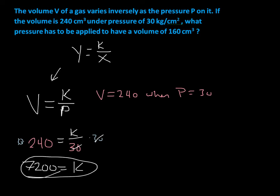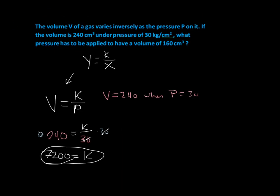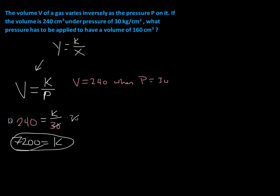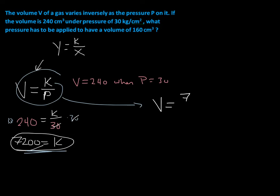After finding K, we plug K back into the equation. Where we see K, we now know K equals 7,200. So our new equation is V equals 7,200 over P.